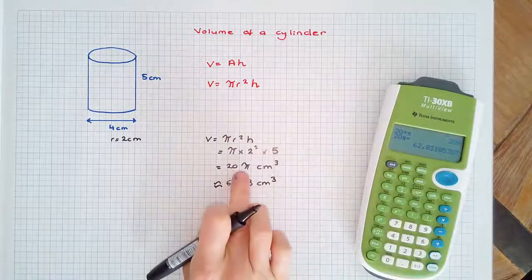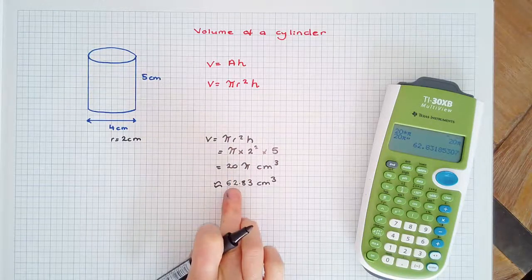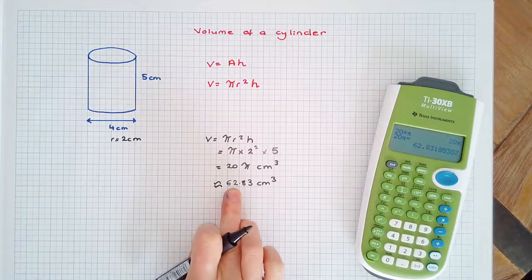So leaving it in terms of π is the exact value, using a decimal approximation is an approximate value.